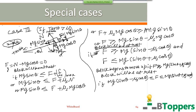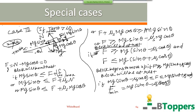Therefore, the magnitude of minimum force to be applied on the block parallel to the inclined surface to keep it at rest and prevent the block from sliding down the inclined plane is F_min equal to mg(sin θ − νs cos θ). This calculation is valid when tan θ is greater than νs.